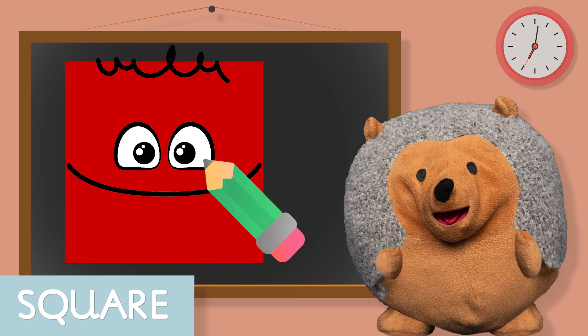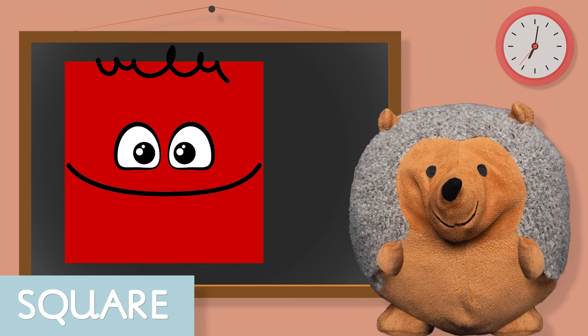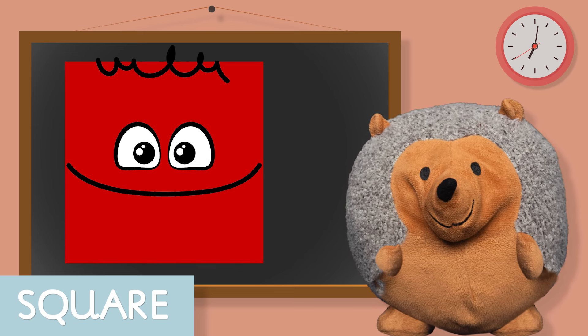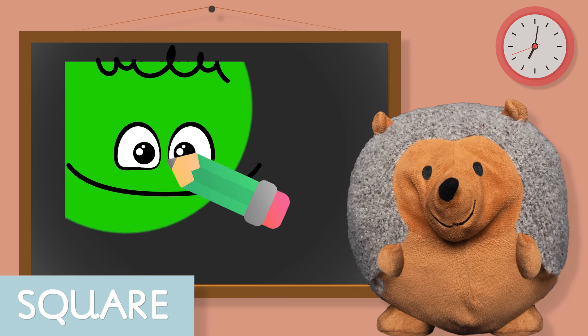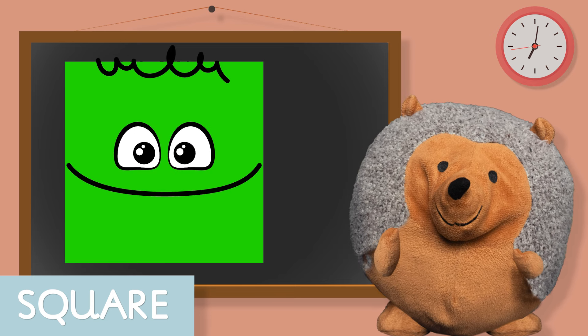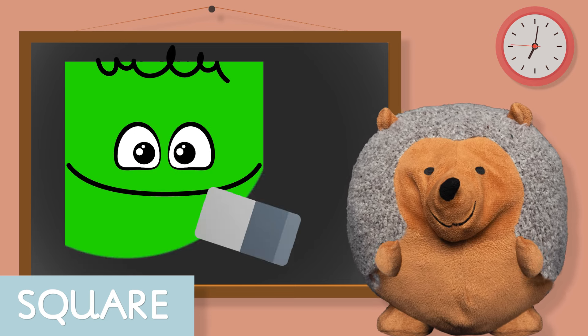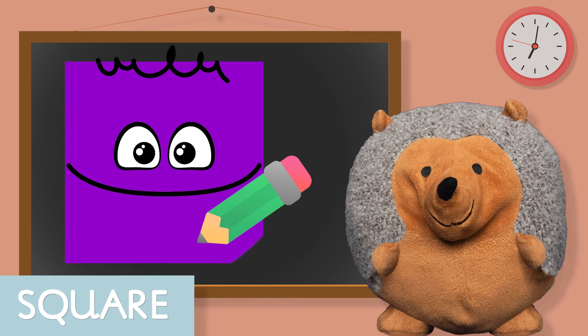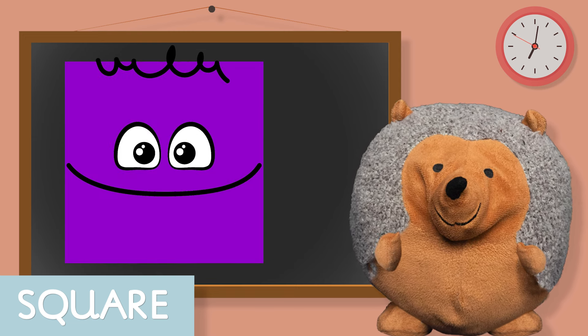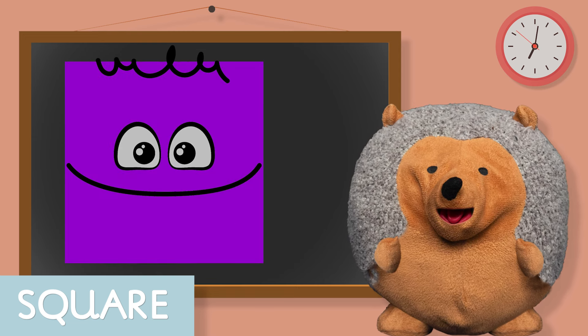Now we have a red square. And a green square. And now a purple square. Now we know what a square is.